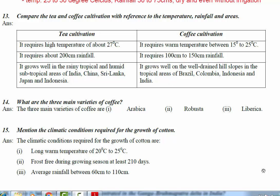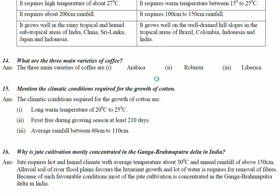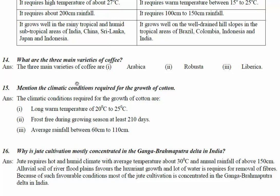Tea grows well in the rainy tropical and humid subtropical areas of India, China, Sri Lanka, Japan, and Indonesia. Whereas coffee grows well on well-drained hill slopes — don't forget: hill slopes — in the tropical areas of Brazil, Colombia, Indonesia, and India.